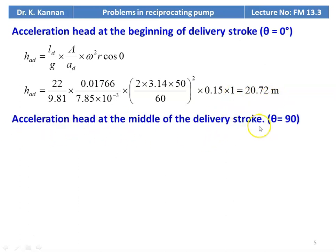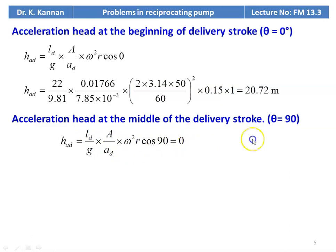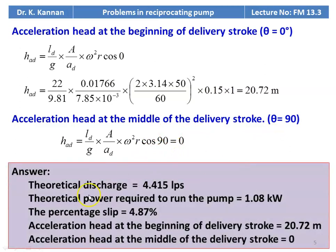Acceleration head at the middle of the delivery stroke (θ = 90°): H_CAD = (LD/g) × (A/AD) × ω² × R × cos 90° = 0, because cos 90° = 0. Summary of answers: theoretical discharge = 4.415 liters/s, theoretical power = 1.08 kW, percentage of slip = 4.87%, acceleration head at the beginning of delivery stroke = 20.72 m, acceleration head at the middle of delivery stroke = 0.